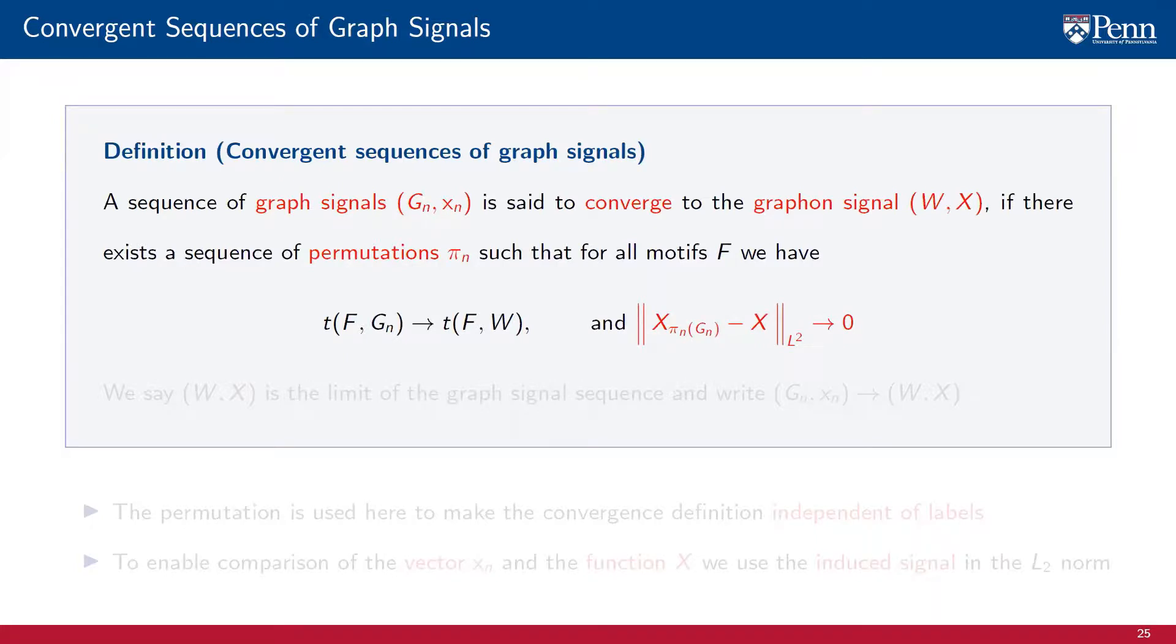The novel aspect of this definition is to add convergence toward zero of the L2 norm of the difference between the graphon signal X and the signal X_{π_n}(G_n). Namely, the graphon signal induced by the graph G_n relabeled according to the permutation π_n. We say that the graphon signal (W, X) is the limit of the graph signal sequence (G_n, x_n).